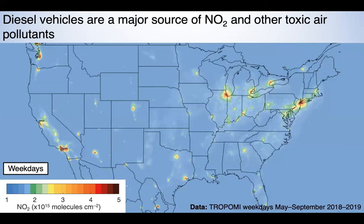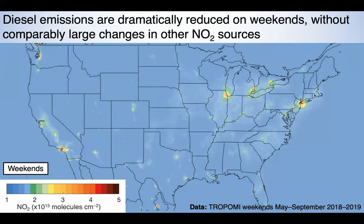One real benefit of satellite observations is that they include temporal information to interpret pollution sources. Looking at NO2 pollution across the country on weekdays versus weekends reveals a dramatic difference in the amount of pollution. In the United States, this difference is driven by differences in diesel truck traffic. Diesel trucks make up only 3 to 5% of the total on-road vehicle fleet, but can account for 40 to 60% of pollution in cities. We can use this weekday/weekend observational difference as a constraint on the effect of diesel emissions on inequality.